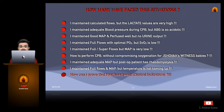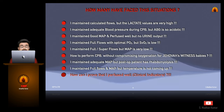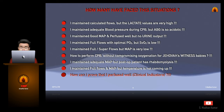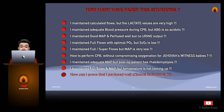I maintained full or super flows, but mean arterial pressure is very low. I maintained adequate mean arterial pressure, but post-op patient has rhabdomyolysis. I maintained full flows and mean arterial pressure, but the temperature is not coming up. How to perform CPB without compromising oxygenation for Jehovah's Witness babies without adding any blood? Most importantly, how can I prove that I perfused well? Is there a clinical indicator for that?